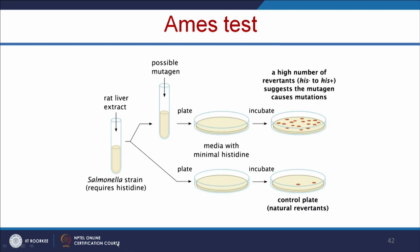The Ames test uses a bacteria called Salmonella which requires histidine for its growth. A possible mutagen — in this case nanoparticles — is added. The bacteria are grown in media with minimal histidine, and in the presence of a possible mutagen, if it causes a mutation, it converts histidine-negative to histidine-positive bacteria, which will grow more on the plate. If bacteria grow more on this plate compared to the control plate where only few colonies are present, that means the nanoparticle may have induced a mutation in the genetic material.